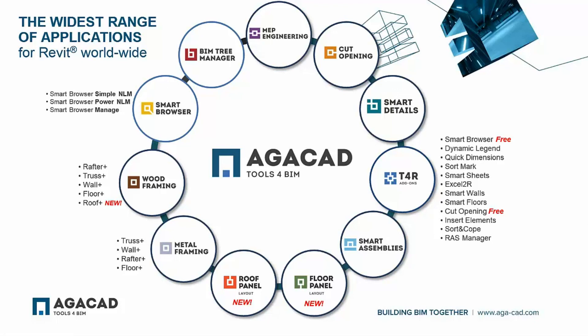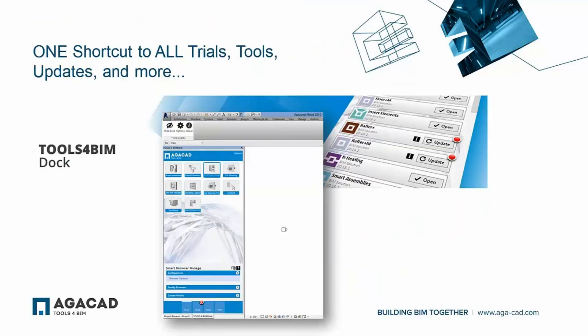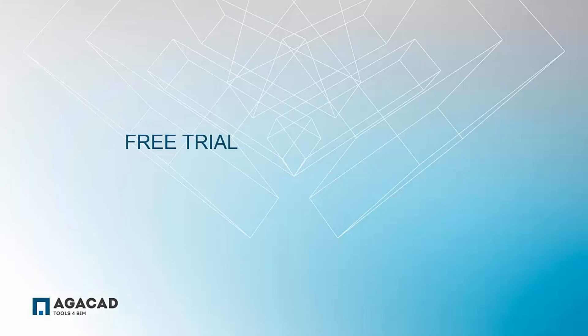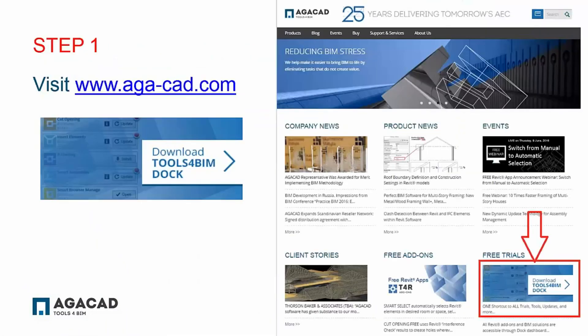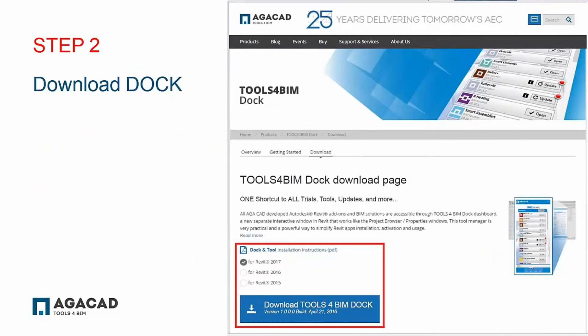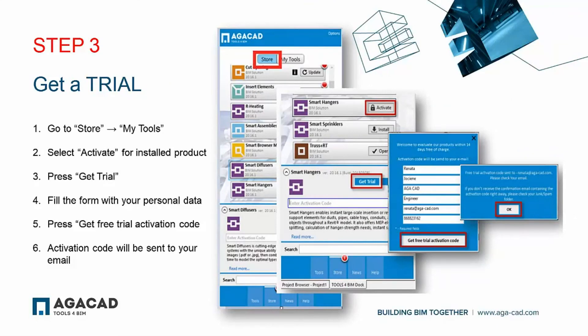As you saw, with BIM Tree Manager you will be able to control projects better with significant savings of time, increase productivity, enhance workflow and BIM model quality by managing hundreds of grouped or selected elements automatically. All AGA CAD developed Autodesk Revit add-ons and BIM solutions are accessible through Tools for BIM Doc Dashboard, a new separate interactive window in Revit that works like the Project Browser or properties window. You can get a free trial of BIM Tree Manager — just go to AGACAD.com, download Tools for BIM Doc, then go to Store, My Tools, select Activate for installed product, press Get Trial and fill the form. You will receive the Free Trial Activation Code to your email.